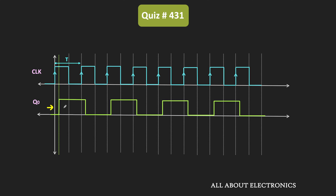This delay duration is equal to Δt, and the time period of Q0 is equal to 2T, because the Q0 waveform repeats after two cycles of the clock signal. As you can see, the Q0 output toggles at every rising edge of the clock pulse, but it changes after the delay of Δt.